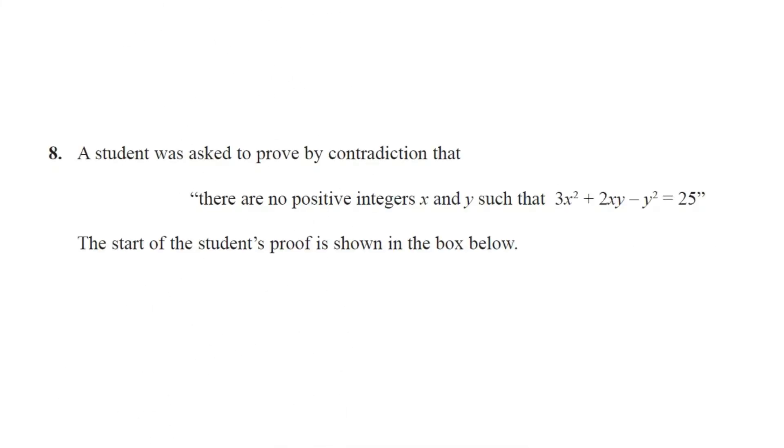Question number 8. A student was asked to prove by contradiction that there are no positive integers x and y such that 3x squared plus 2xy minus y squared equals 25. The start of the student's proof is shown in the box below.